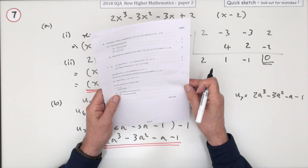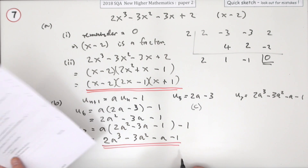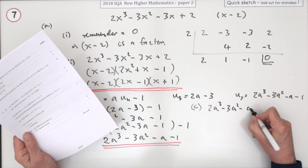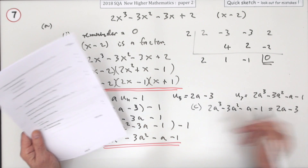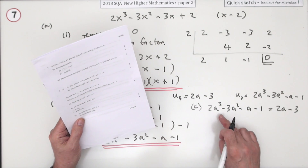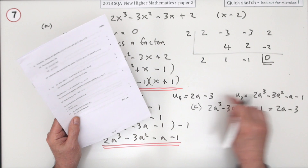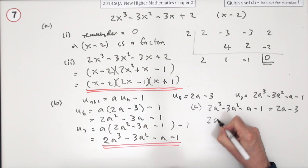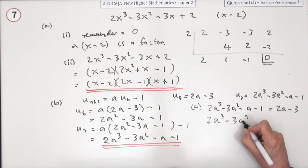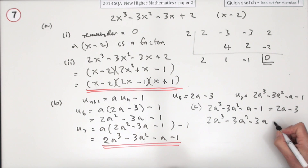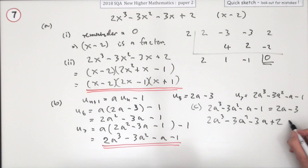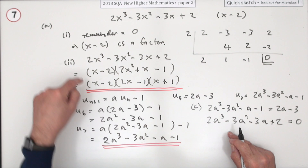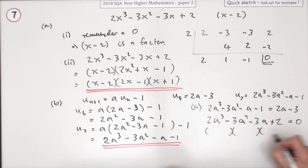Then for part c: for this sequence, it's known that u7 is equal to u5. That just means making them equal: 2a cubed minus 3a squared minus a minus 1 equals 2a minus 3. Determine the value of a. Taking everything over, that becomes minus 3a and plus 2, and you end up with this expression again — identical to the original cubic. So no need to redo synthetic division, because you already know the factorisation.